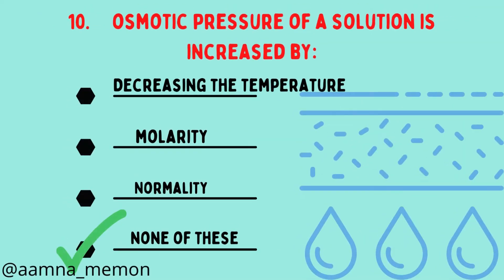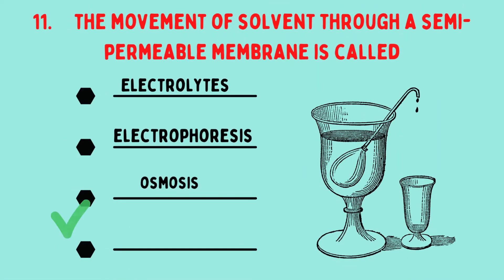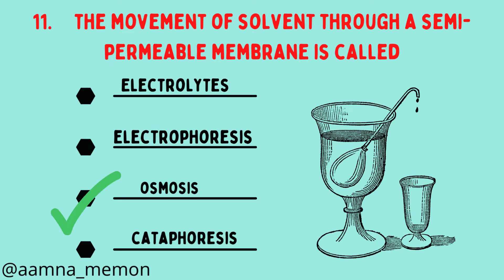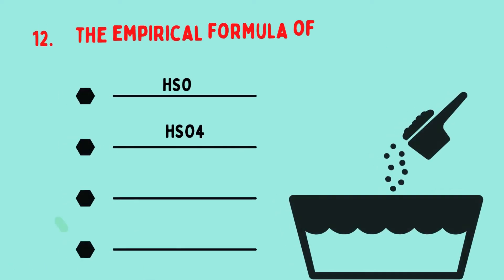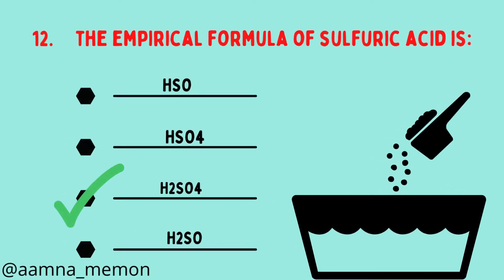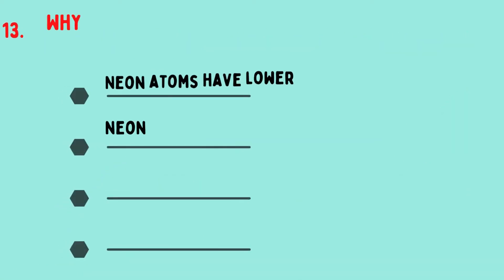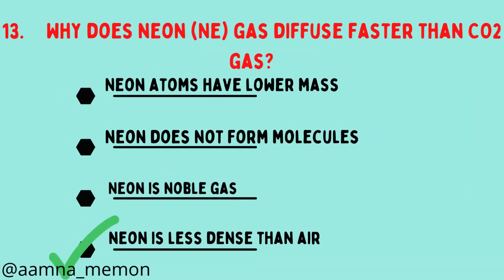Osmotic pressure of a solution increases by: none of these. The movement of solvent through a semi-permeable membrane is called osmosis. The empirical formula of sulfuric acid is H2SO4. Why does neon gas diffuse faster than carbon dioxide? Because neon is less dense than air.